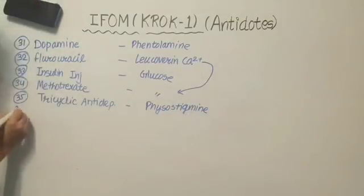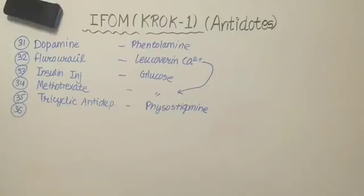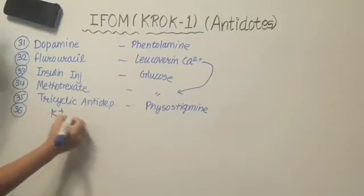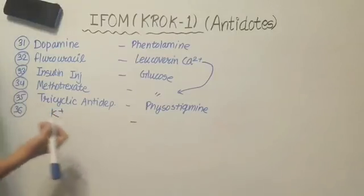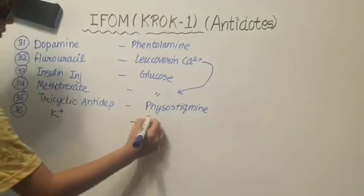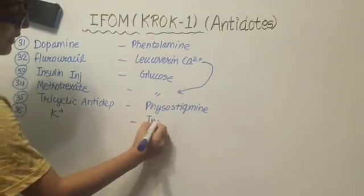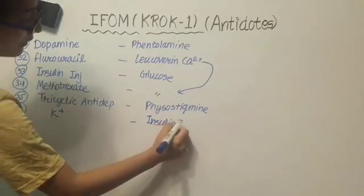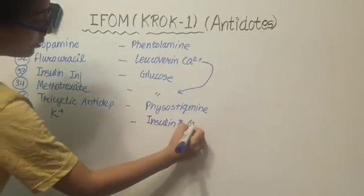Our 36th drug is potassium. The antidote of potassium toxicity is insulin and glucose.